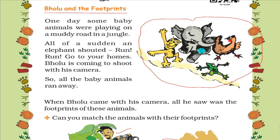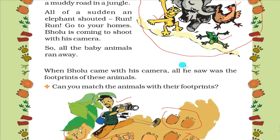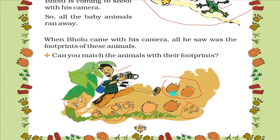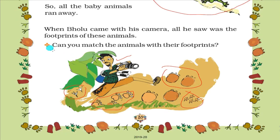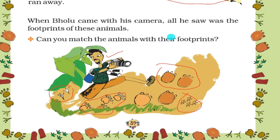In this picture we have elephant, chicken, tiger and frog - four baby animals. And here also four footprints. The question is: can you match the animals with their footprints? I will show you some feet and footprints of the animals.